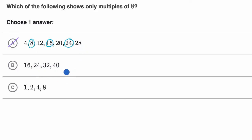Now what about this choice right over here? 16 is eight times two. 24 is eight times three. 32 is eight times four. 40 is eight times five. In fact, we could skip count. Eight, then 16, 24, 32, 40, then 48, 56, so on and so forth. But these are all multiples of eight. So I like this choice.